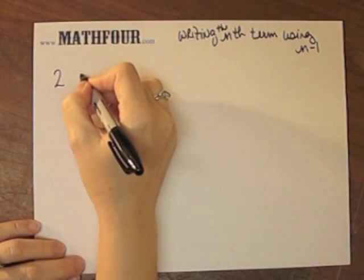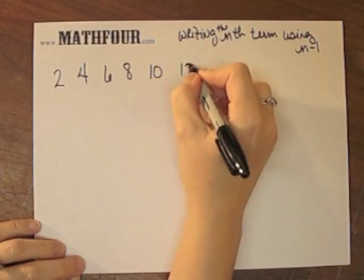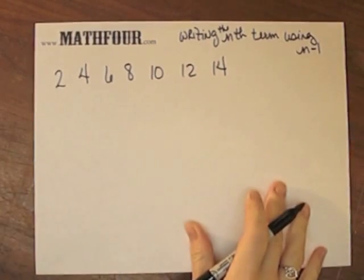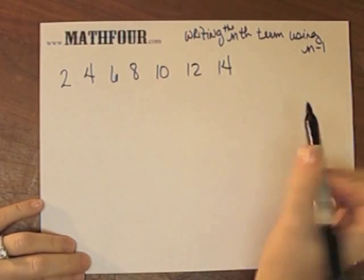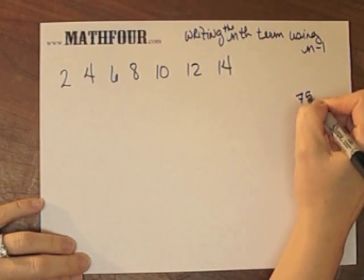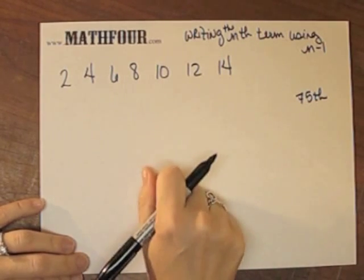If you have a sequence, say the even numbers, and you want to talk about the nth term, say maybe the 75th term, which you could probably easily figure out the 75th term of this.